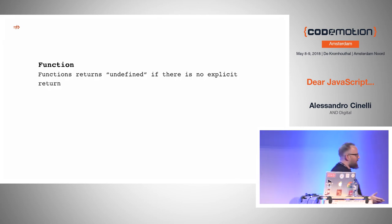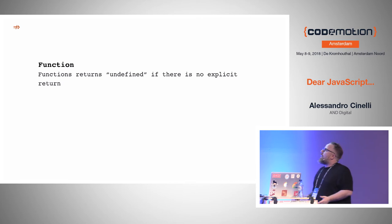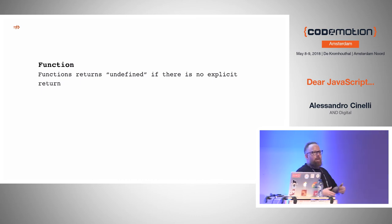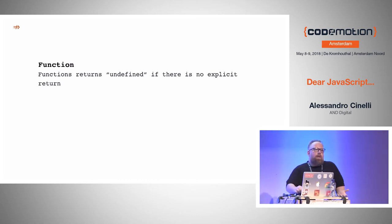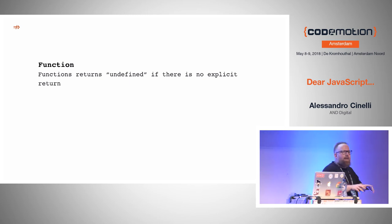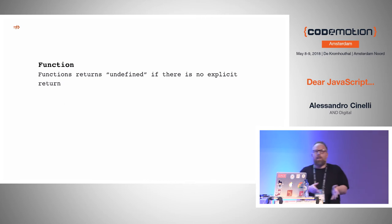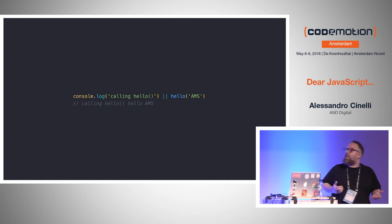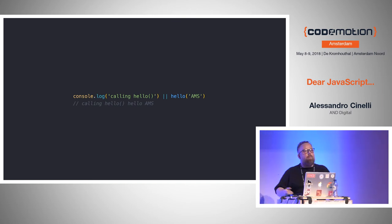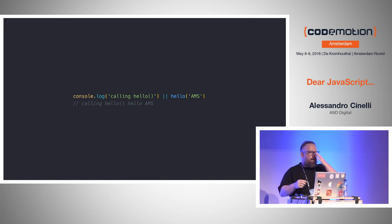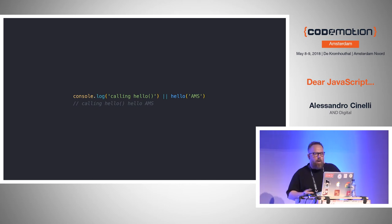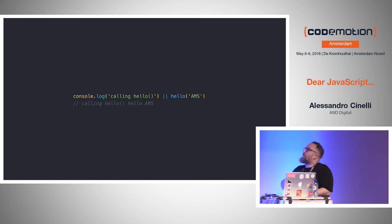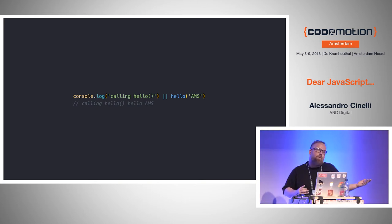A function in JavaScript always returns something — if you're not explicitly returning something, it always returns undefined. That's why the first time I tried things in the console I said 'it's undefined — maybe there's an error.' No, it's totally fine. And that's why you can do these kinds of tricks: console.log doesn't return anything, so it returns undefined. Then you use a logical OR and call a function — this will work because undefined is a falsy value, so it will execute the second thing while also executing the console.log.